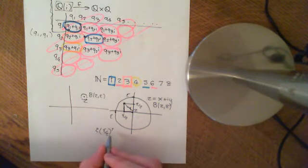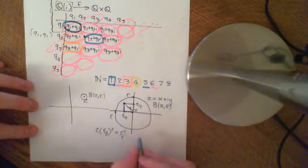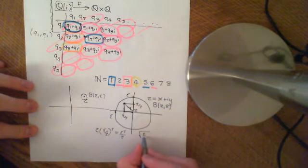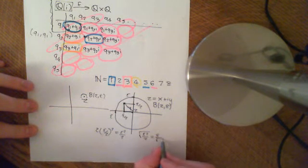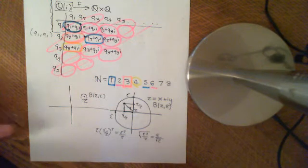we get that this is 2 times epsilon over 2 squared, which is just epsilon squared over 2. And what we need to then do is square root it, and we'll get the square root of epsilon squared over 2, which will give us epsilon over the square root of 2, which is less than epsilon, because the square root of 2 is greater than 1.